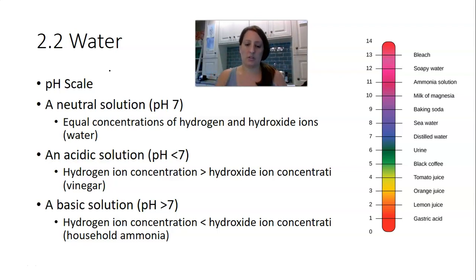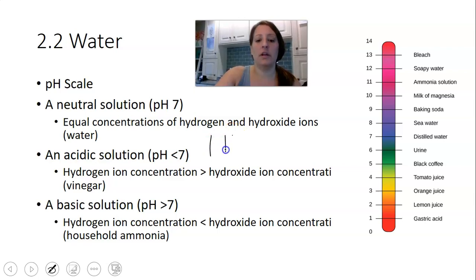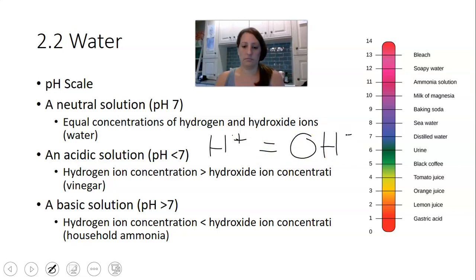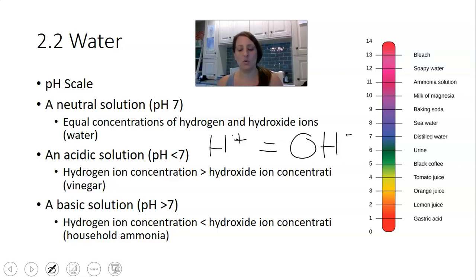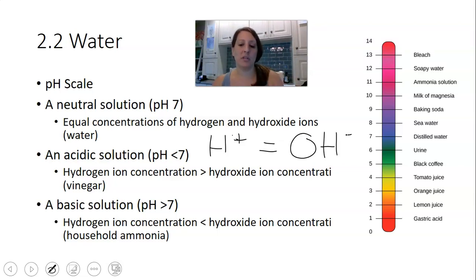A neutral pH is a pH of seven. At neutral pH, the amount of hydrogen ions equals the amount of hydroxide ions. Distilled water is around pH 7. The pH scale goes from zero to 14. As we move below seven — a pH of six, five, four, three, two, one — we're getting more and more acidic as we move towards zero. An acidic solution has a pH less than seven, meaning hydrogen ion concentration is greater than the hydroxide ion concentration.